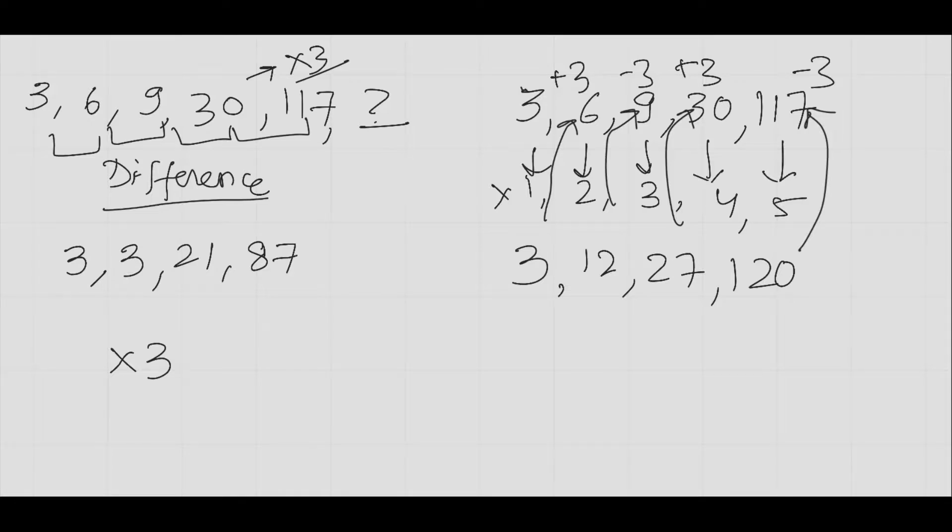What is the pattern we get here? Every previous number is multiplied by its index, and then 3 is either added or subtracted to get the next number in the sequence.